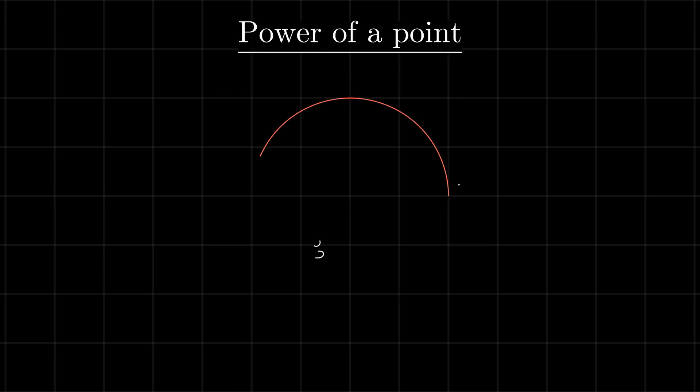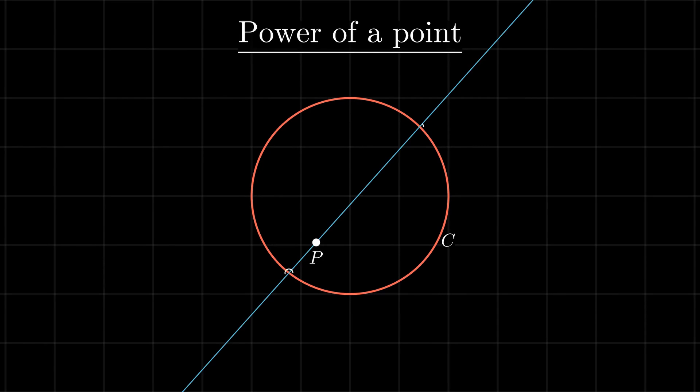One of the fundamental theorems of geometry important in the Apollonius problem is the power of a point theorem. Given a point P and a circle C, consider any line through P that intersects the given circle at two points A and B. The power of point P with respect to this circle is given by the product of the distances P-A and P-B.